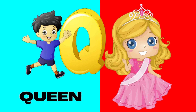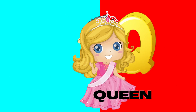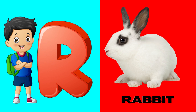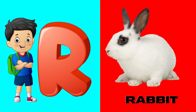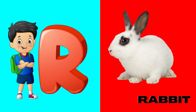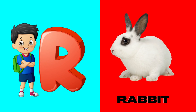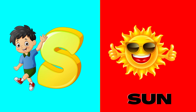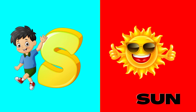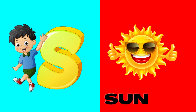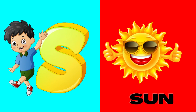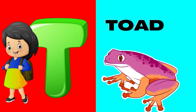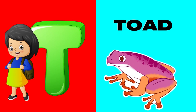Q is for queen, qu-qu-queen. R is for rabbit, r-r-rabbit. S is for sun, s-s-sun. T is for toad, t-t-toad.